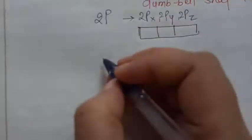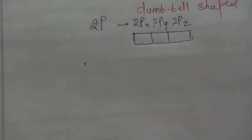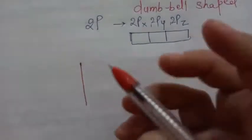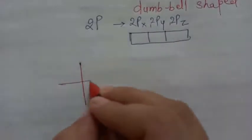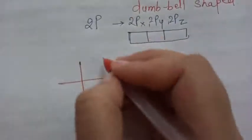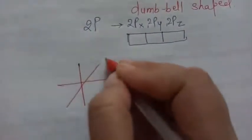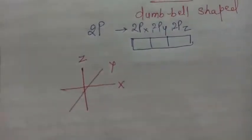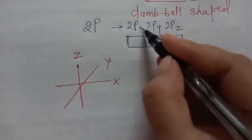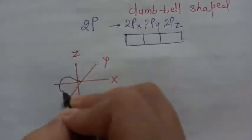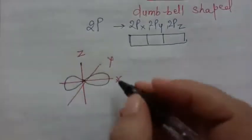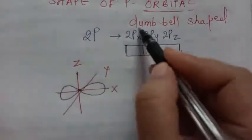Now if we draw the diagram, then again we will be drawing the three axes. As we know this is x axis, this is y axis and this is z axis. So if we are supposed to draw 2px, 2px is dumbbell shape as I told, and the dumbbell will be drawn on x axis. So if somebody told you to draw 2px, this is the representation.